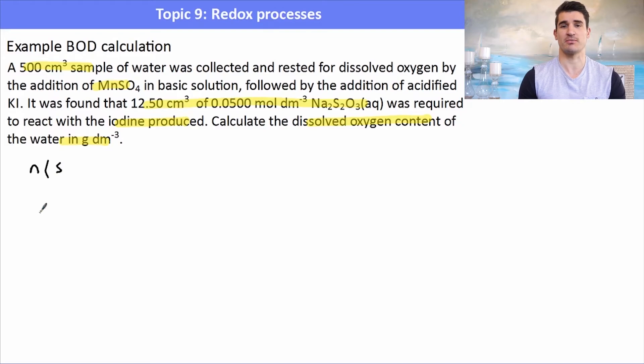We start by calculating the number of moles of the thiosulfate solution. Concentration 0.0500 multiplied by the volume converted into decimeters cubed gives us the number of moles of thiosulfate used in the titer.